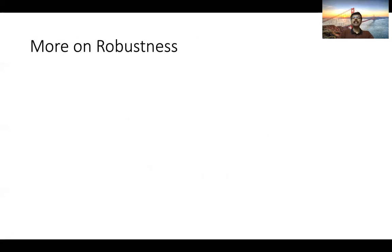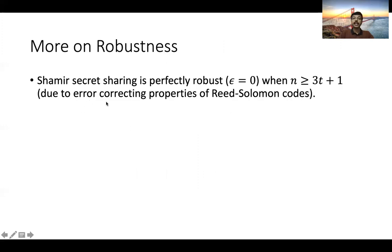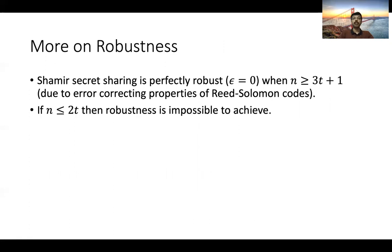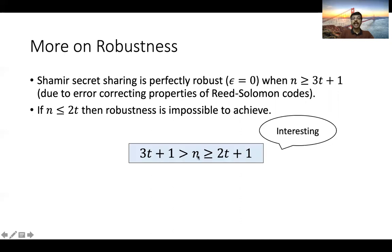Given this definition, let me state a couple of observations. First, Shamir secret sharing is perfectly robust (epsilon = 0) when N is greater than or equal to 3T + 1, which follows from the error-correcting properties of Reed-Solomon codes. On the other hand, if an adversary can corrupt a majority of parties — that is, N is less than or equal to 2T — then robustness is impossible to achieve. So the interesting parameter regime is when N lies between 2T + 1 and 3T + 1.